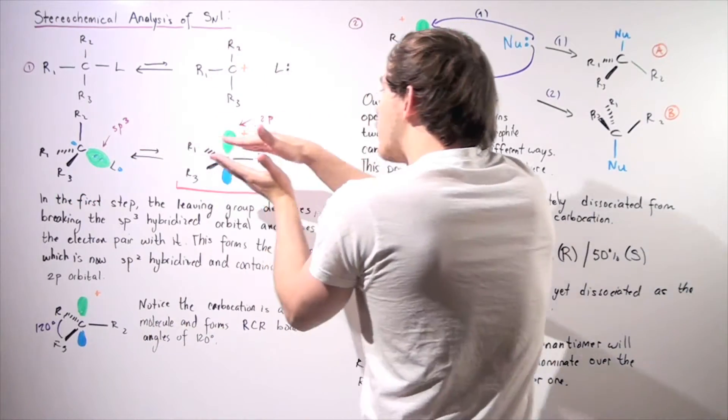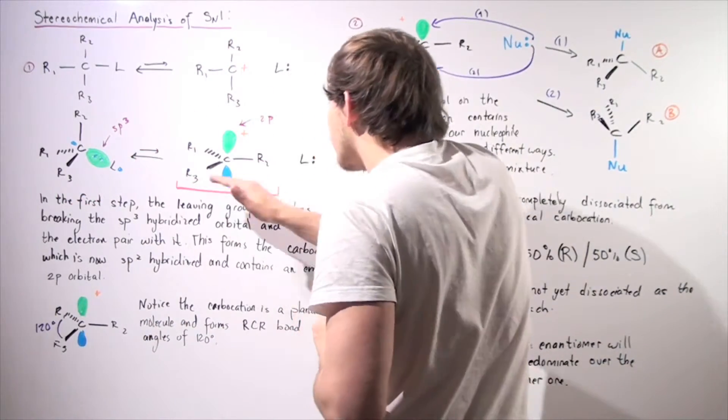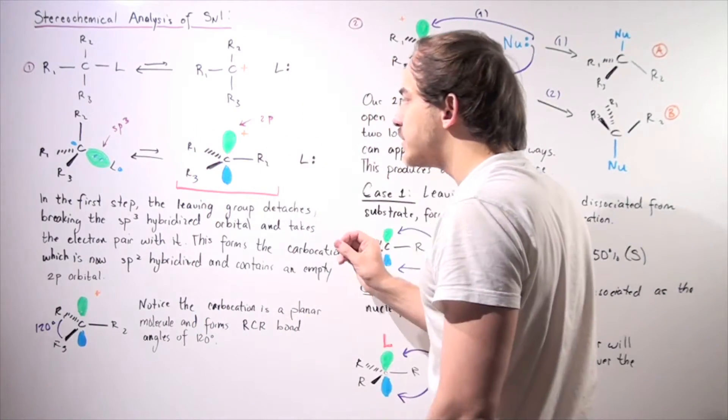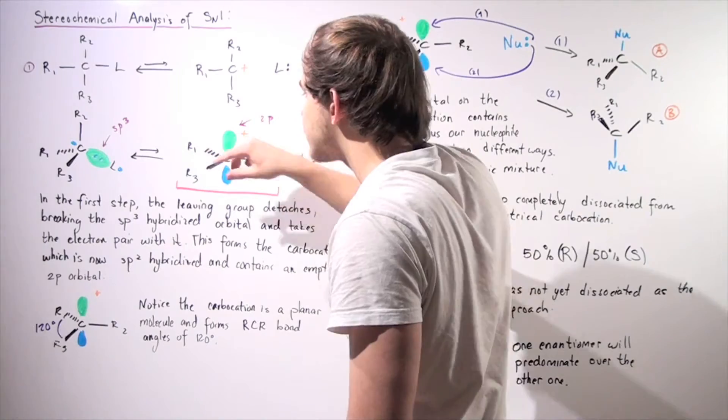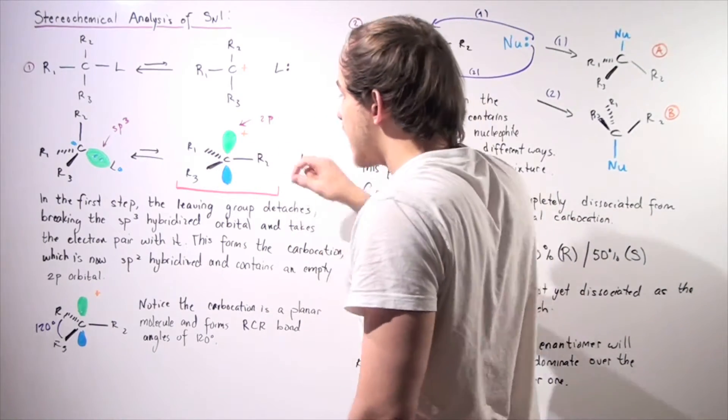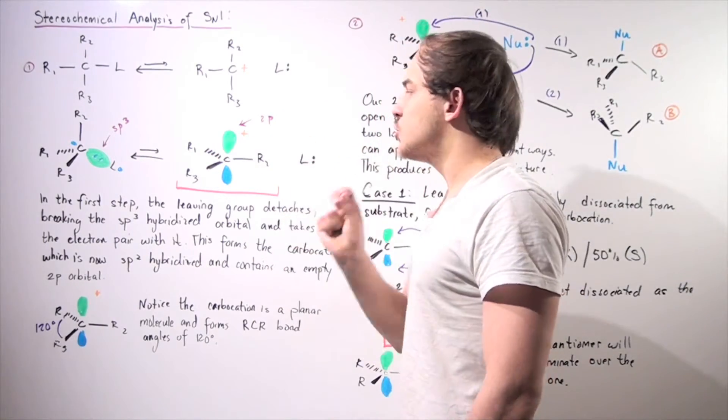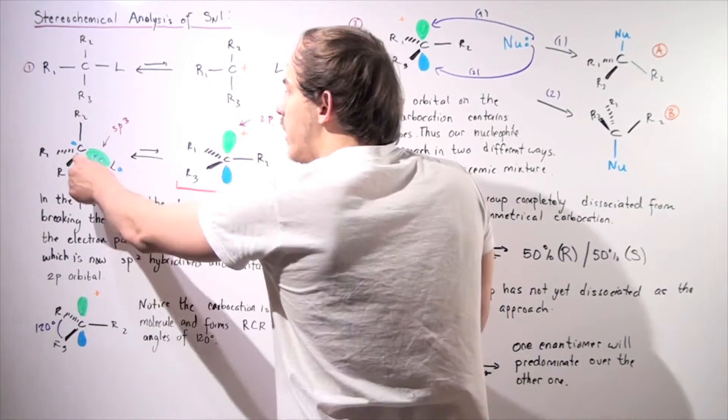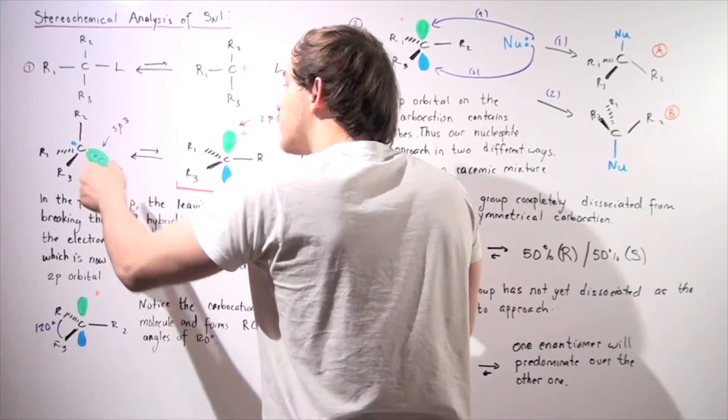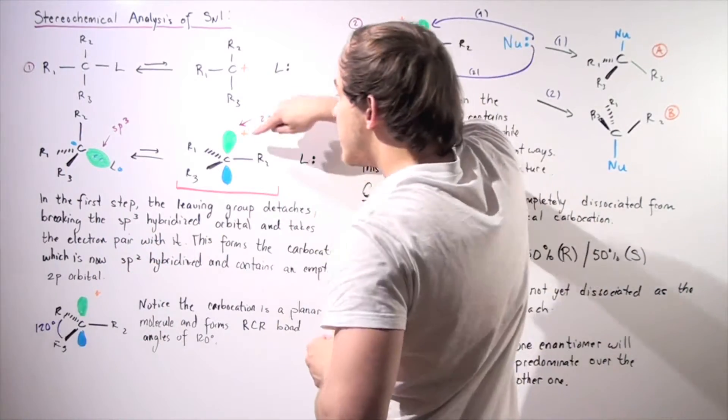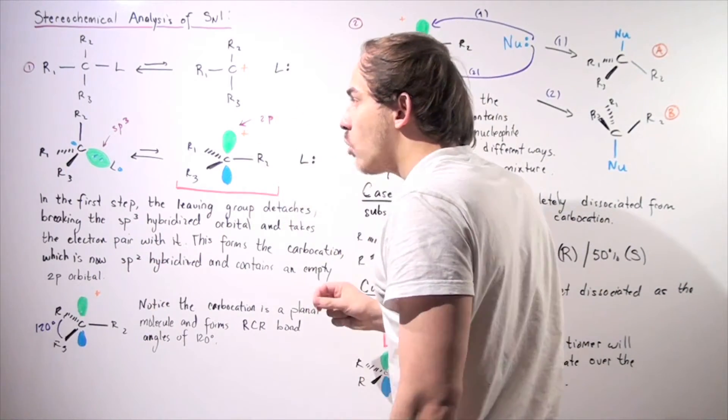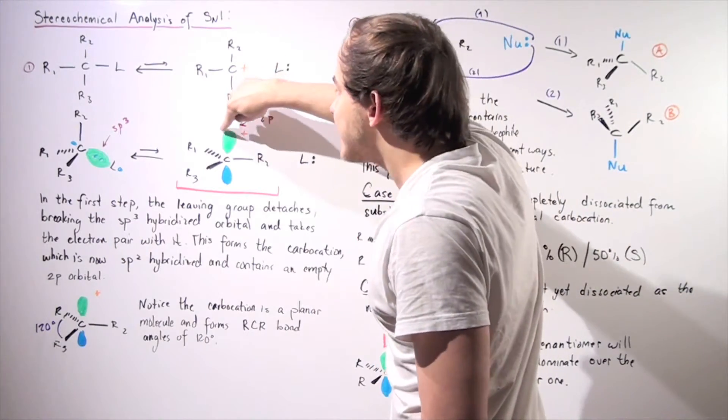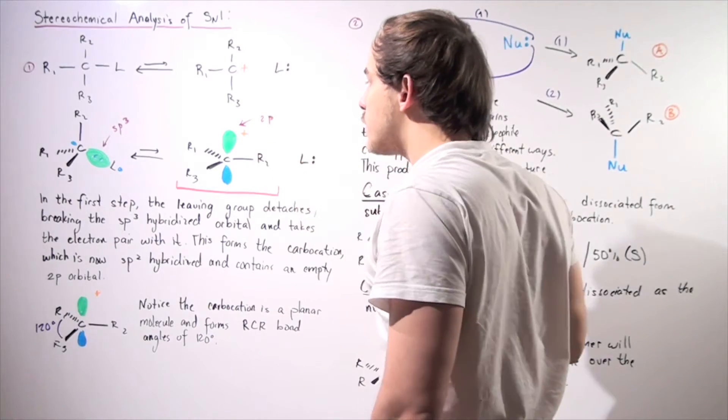And when we form our products, we have the following two intermediates. This is no longer sp3 hybridized. All these bonds are sp2 hybridized, and the carbon is sp2 hybridized. And now, because our blue lobe began enlarging when the two pairs of electrons left, this became a 2p orbital. So we went from an sp3 hybridized to a positively charged empty 2p orbital.